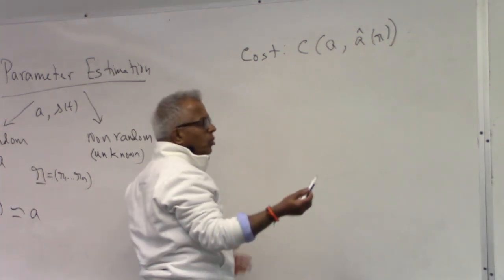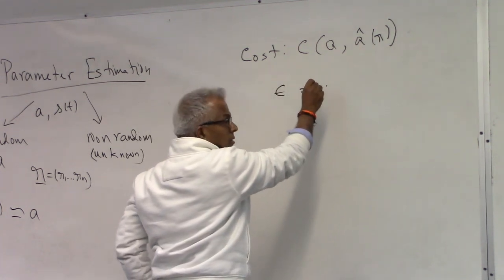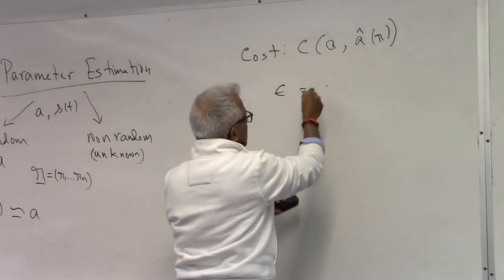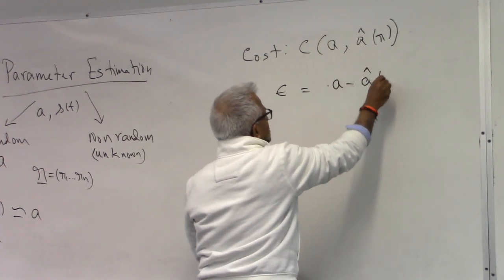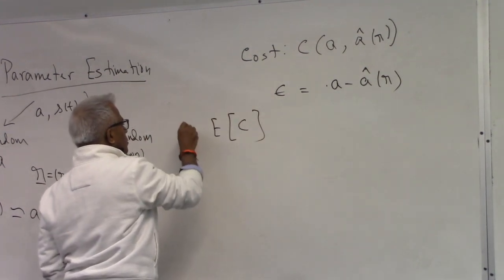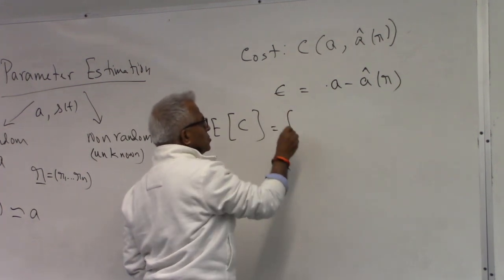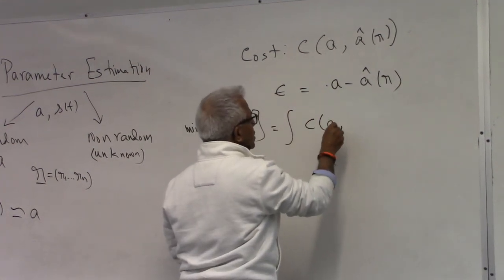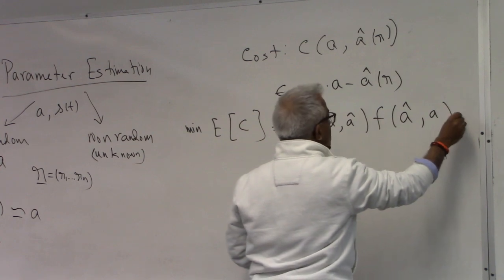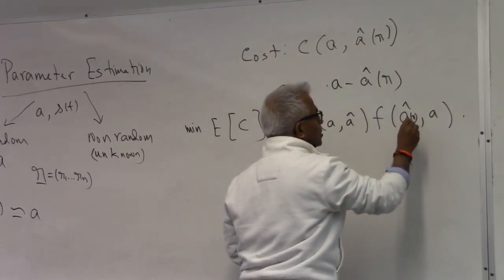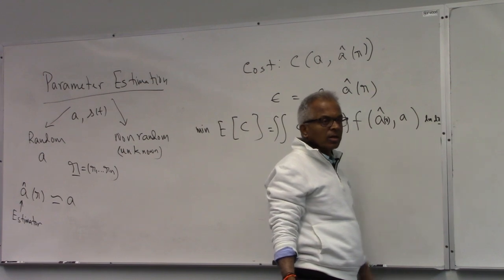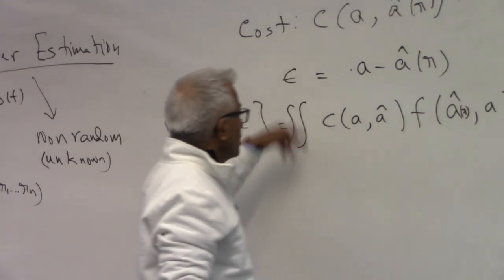One common cost is to take the error. We minimize the average cost by choosing the best estimator. The average cost is the expected value of C — that is, C(A, A-hat) multiplied by the joint density function of A and A-hat. But A-hat is a function of R, so this integral is over all of them — N variables on R and then A, which is a random variable. So this is an N-fold integral.